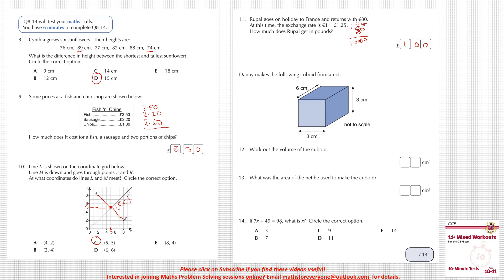Danny makes a cuboid from a net. Work out the volume of the cuboid: 3 × 3 × 6 = 9 × 6 = 54.